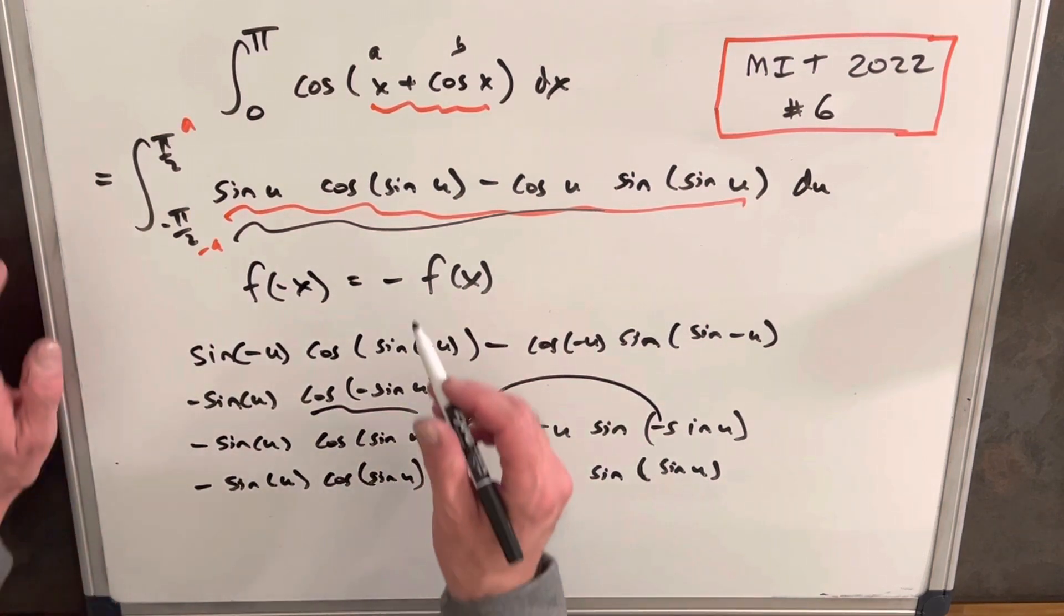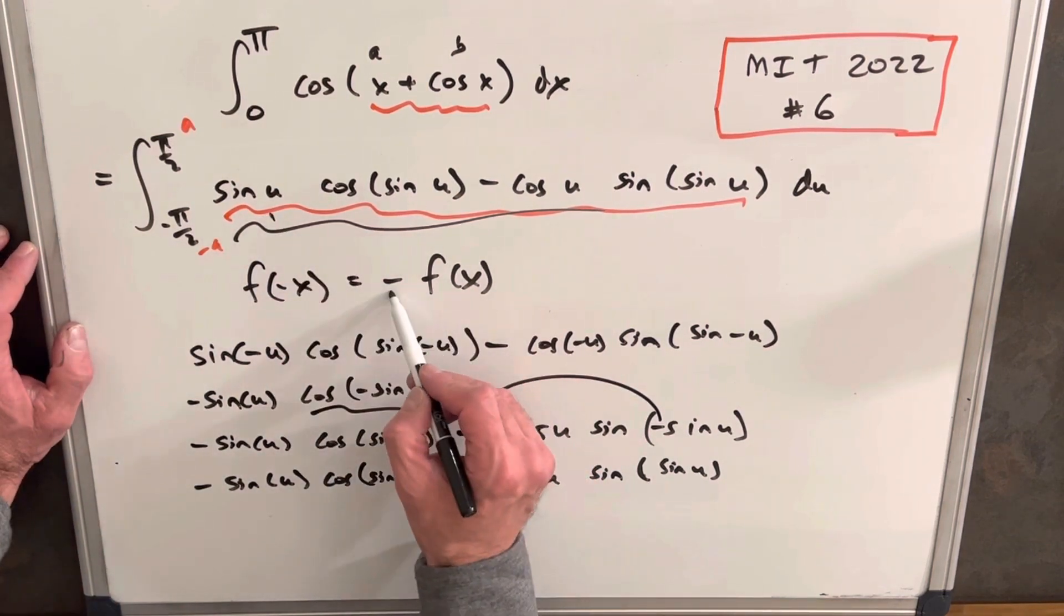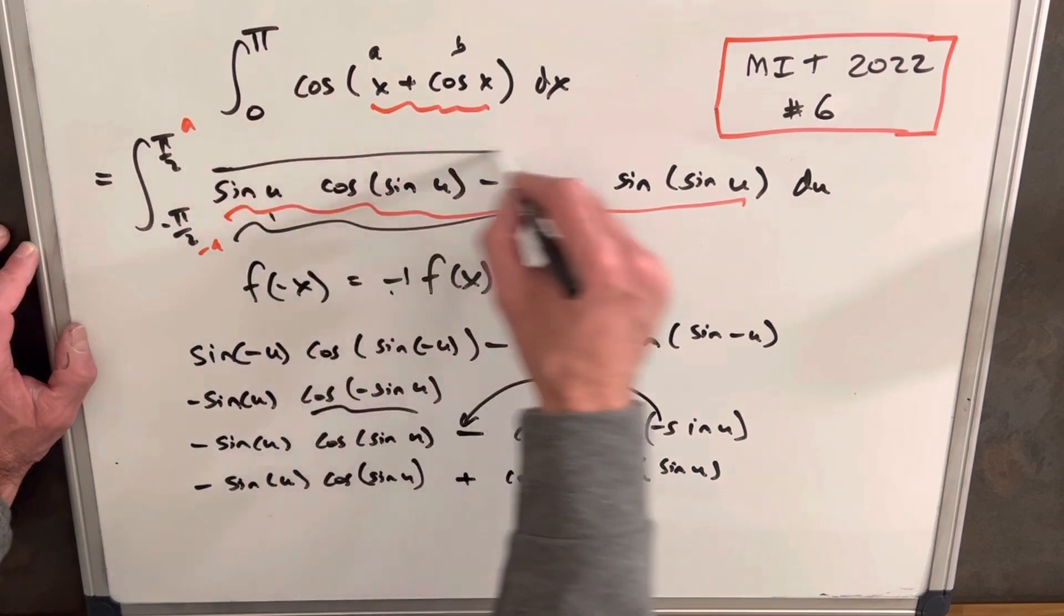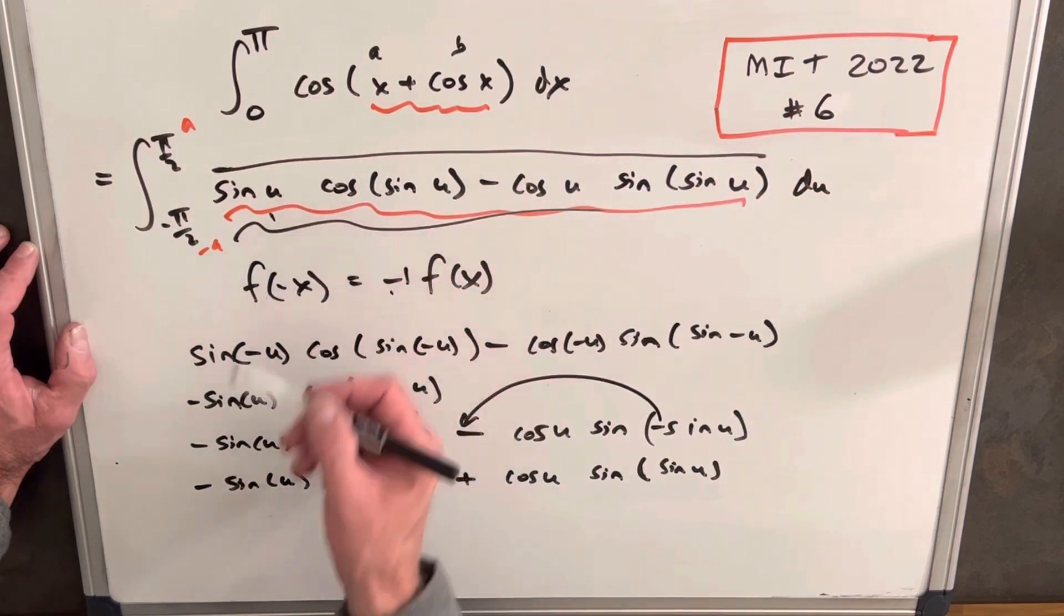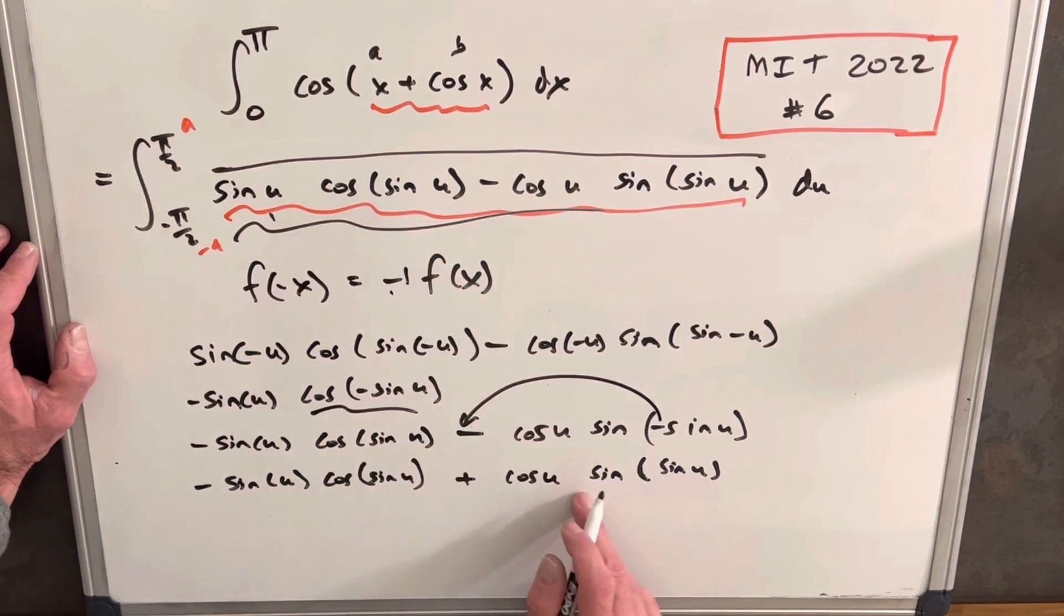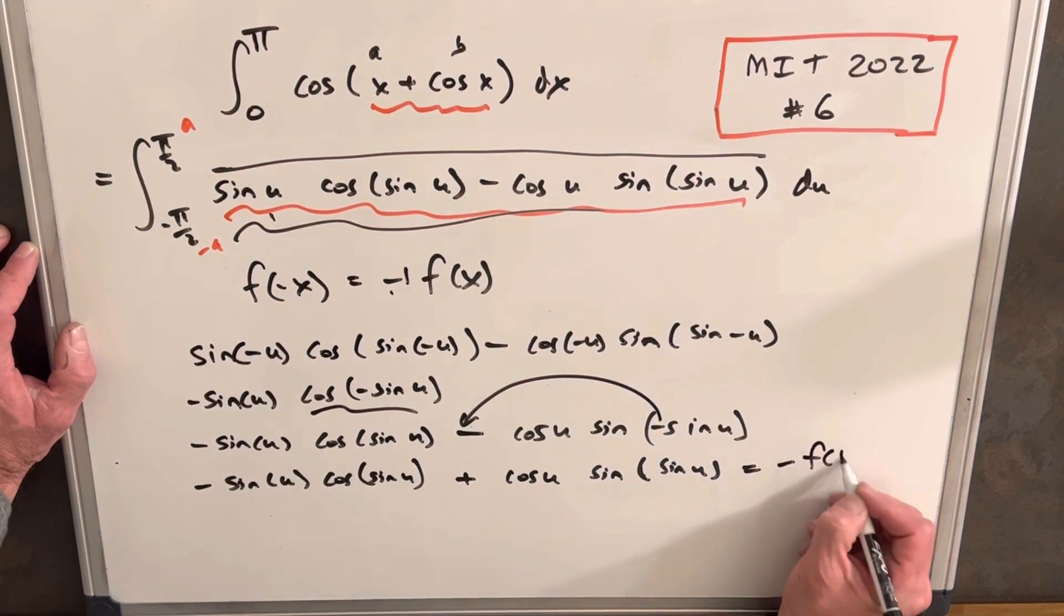And long story short, this is our function. If we take, think of this like, if we multiply minus one times all this, what do we get? We get minus sine u, cosine u, plus cosine u, sine sine u. So this is actually our minus f of x.